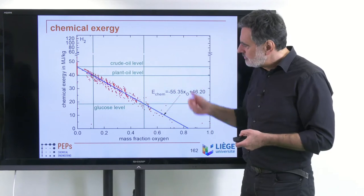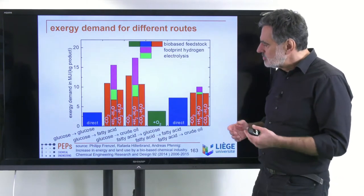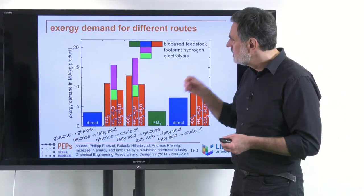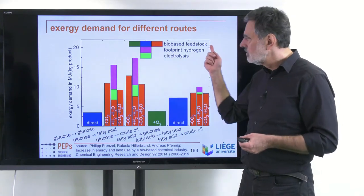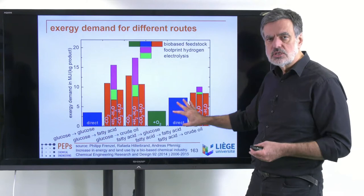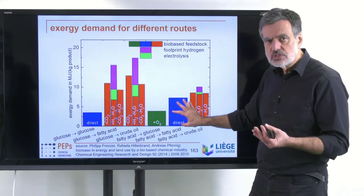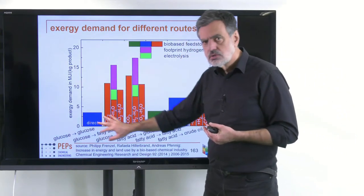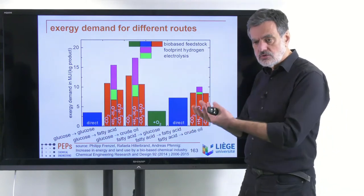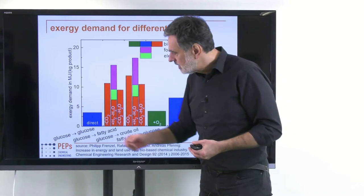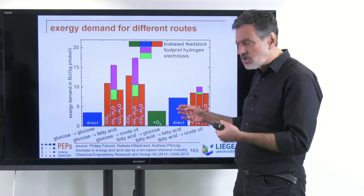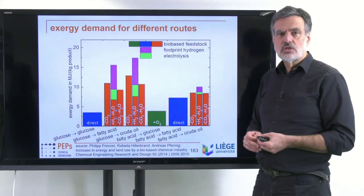He regarded the different options that exist, spelled out here: from glucose to glucose, or from fatty acid to fatty acid — only biobased things. He took into account different contributions, first the feedstock contribution. For fatty acid to fatty acid, the contribution is higher simply because the energetic footprint of producing fatty acids is higher than for glucose. The tons of fatty acids producible from rapeseed, for example, is much lower relative to the energy input compared to glucose from starch.